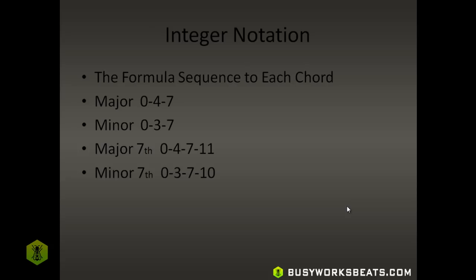Integer notation is a formula sequence for each chord. Major chords are 0, 4, 7. Minor chords are 0, 3, 7 — just like we did in the exercise. We can pick any key as the zero point, count up: one, two, three, four — that's our next key; five, six, seven — that's the last key of the major triad. Notice how minor is only one number different from major — the middle number changes. Zero, four, seven versus zero, three, seven. Instead of counting four steps, we count three. We can take a major chord to minor simply by lowering the middle note down one.